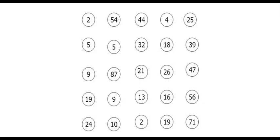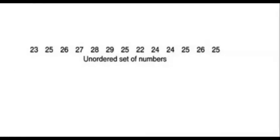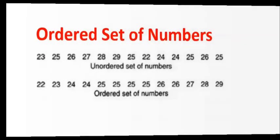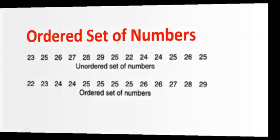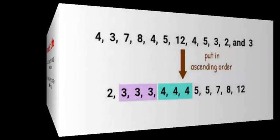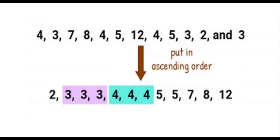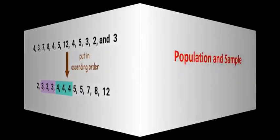Unordered and ordered sets of numbers: unordered lists are simply raw, unprocessed data. This set of numbers needs to be rearranged in order before analysis. Putting numbers in ascending order makes it an ordered set.